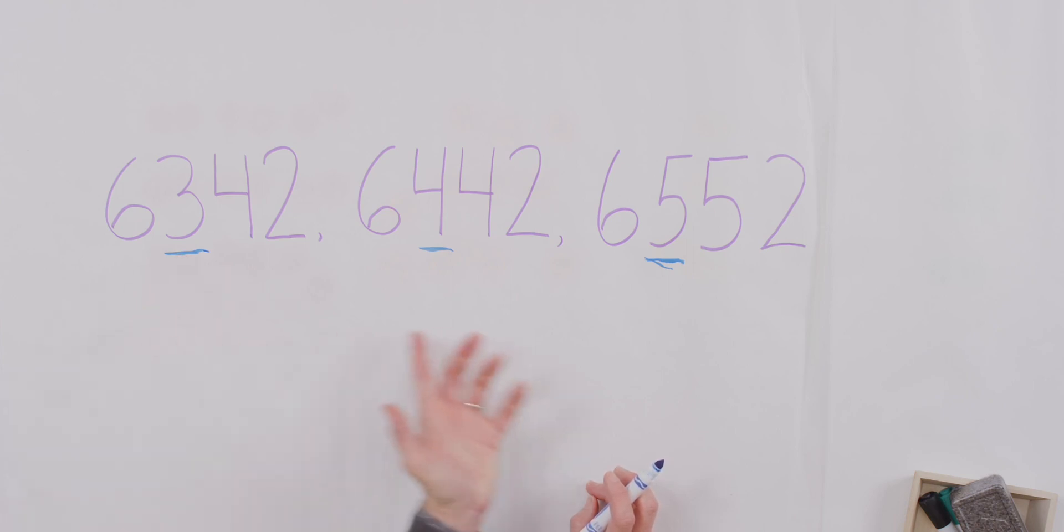Did you say that this one is the greatest number of all? Because 500 is greater than 400 and greater than 300. So then, which one of these numbers is the smallest? That's right, 6,342, because the 300 is smaller than 400 or 500.